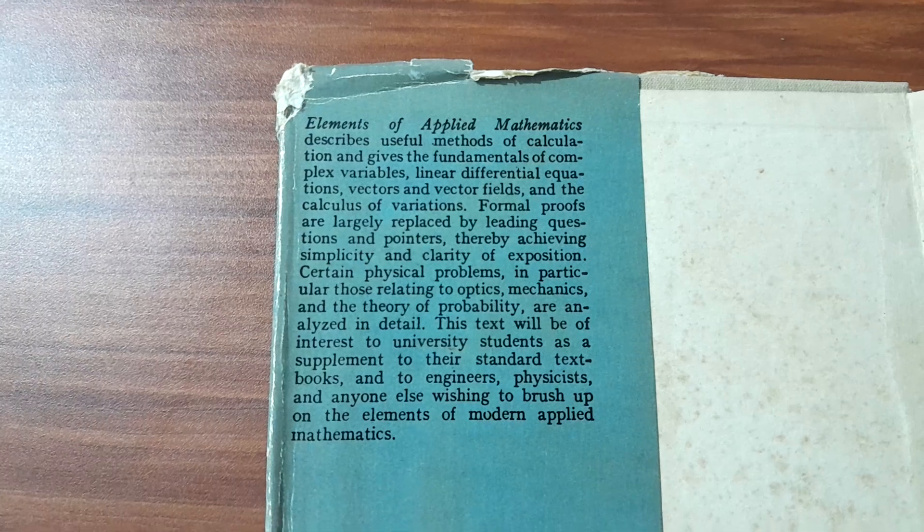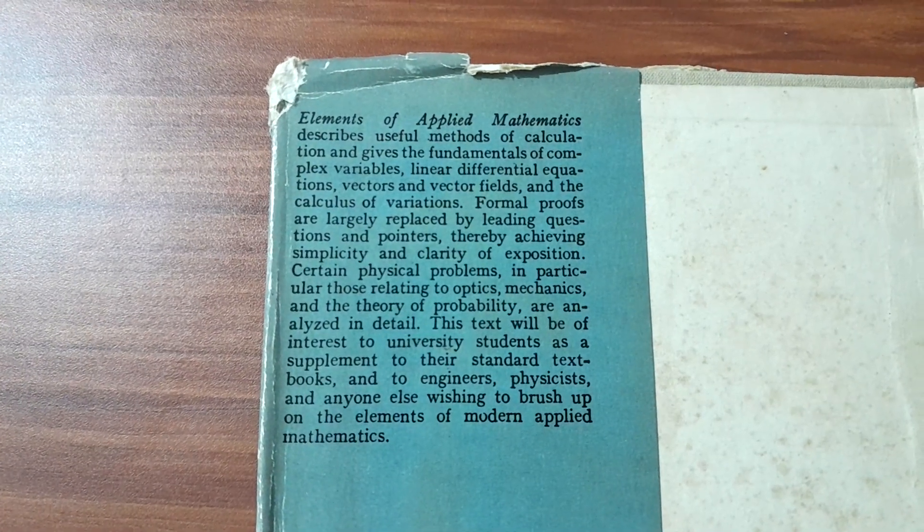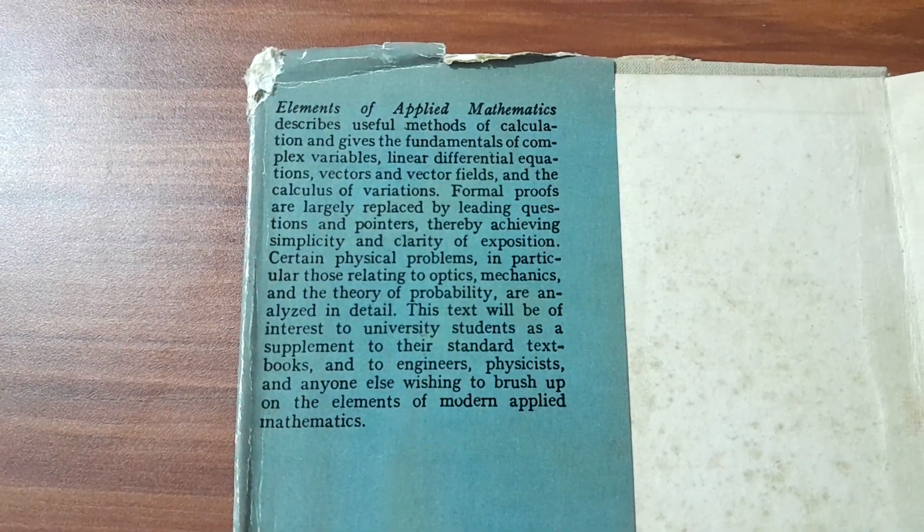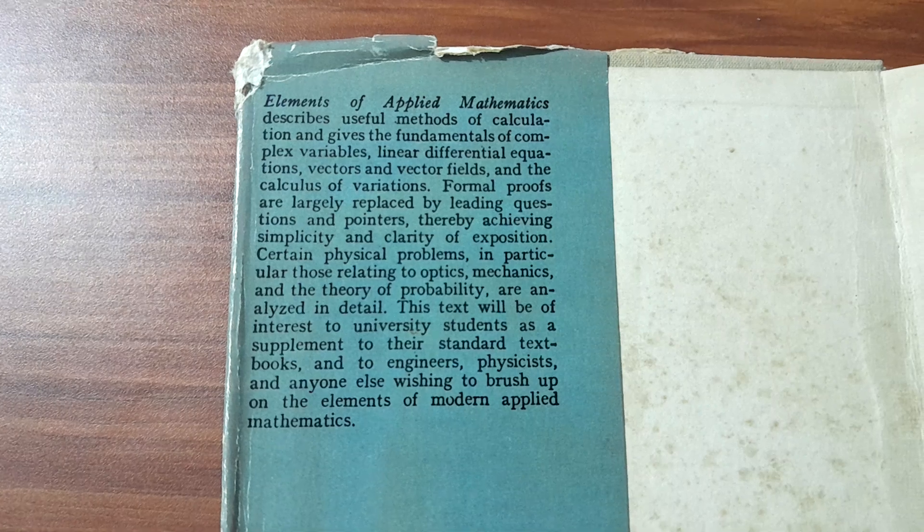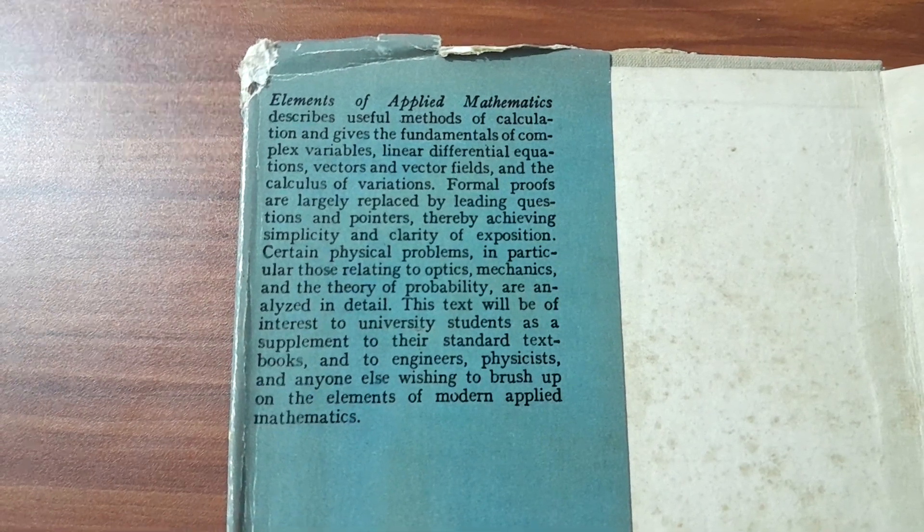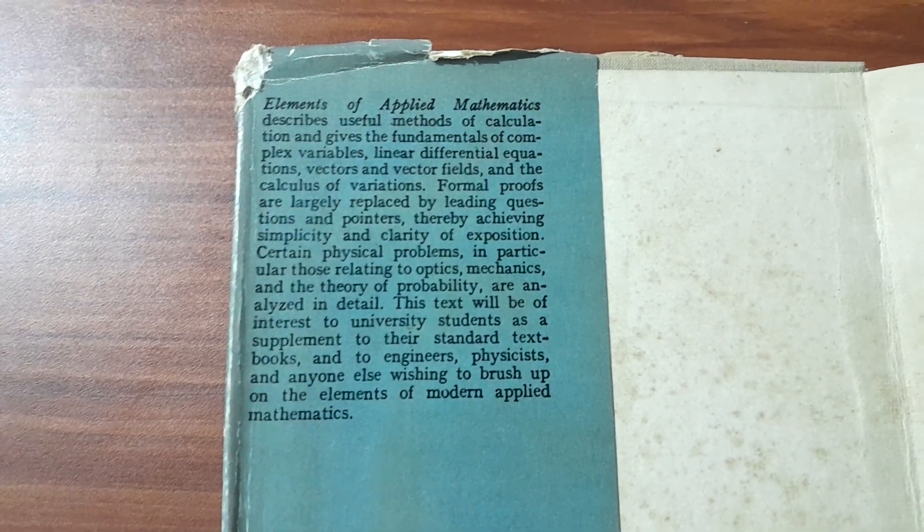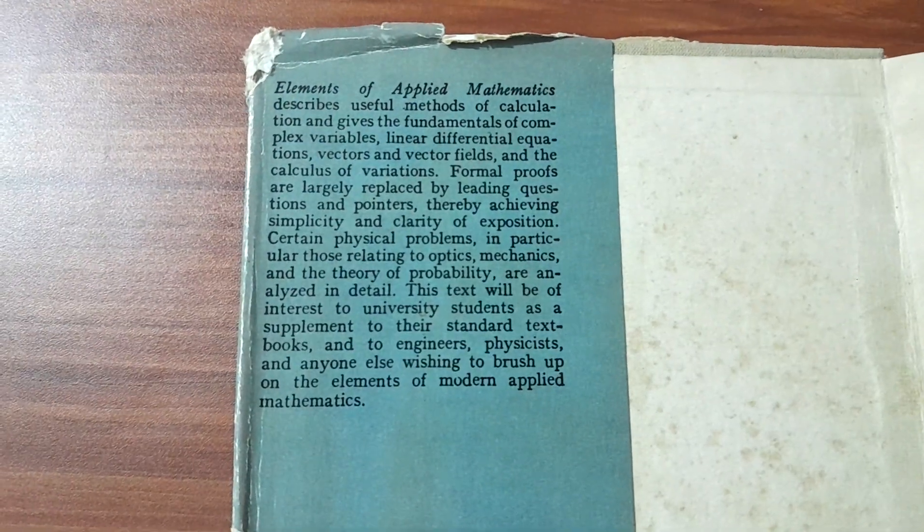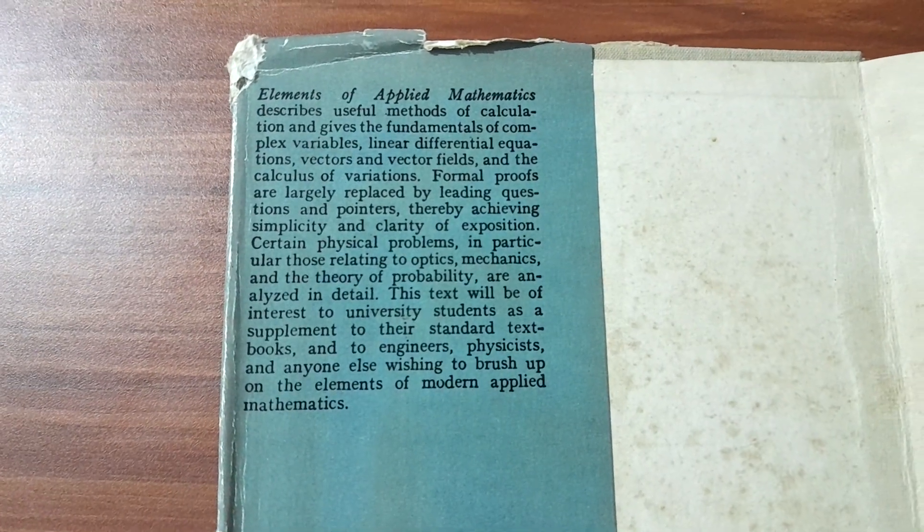Elements of Applied Mathematics describes useful methods of calculation and gives the fundamentals of complex variables, linear differential equations, vectors and vector fields, and the calculus of variations. Formal proofs are largely depressed by leading questions and pointers, thereby achieving simplicity and clarity of exposition.